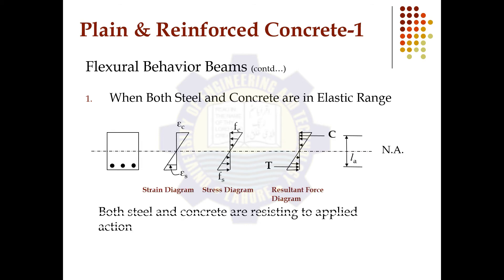Case 1 is when both steel and concrete are in the elastic range. Looking at the cross-section with reinforcement, the strain diagram shows εc at the top concrete surface and strain in the steel at the reinforcement level. The stress diagram shows Fc at the top and Fs at the steel level. The resultant force diagram shows C and T, with La as the distance between them. In this case, both steel and concrete are resisting the applied action.